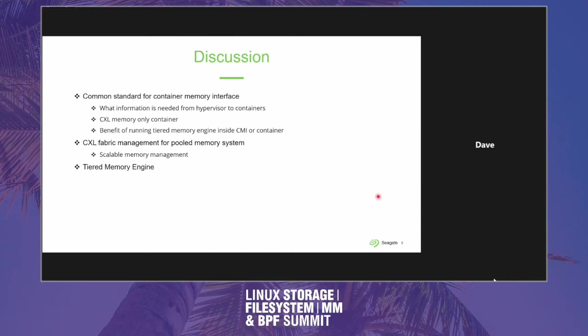Linux today is still very married to the idea that NUMA nodes have distances and that's how we organize and prioritize them. We have the HMAT but we just publish that information — it's not really plumbed into kernel memory policy decisions yet. The CDAT is a per-vendor published table that tells you nominal bandwidth and read/write latency.